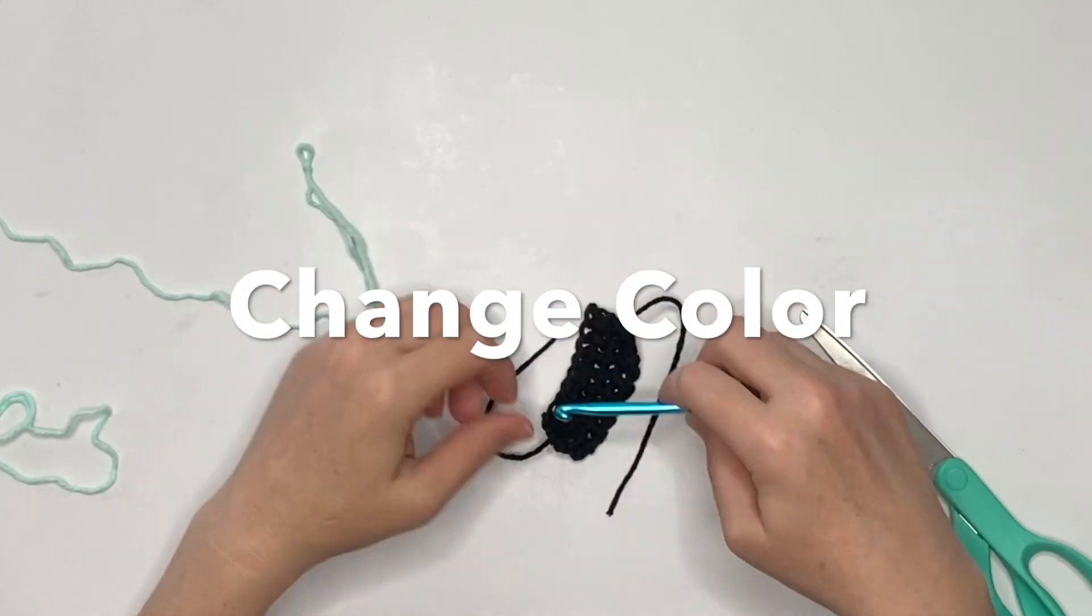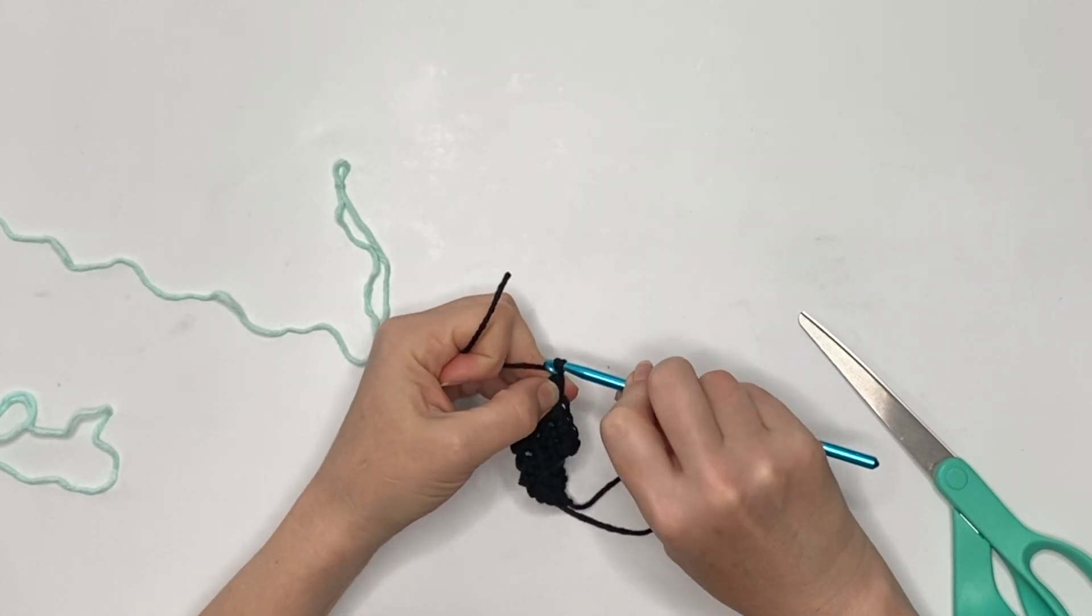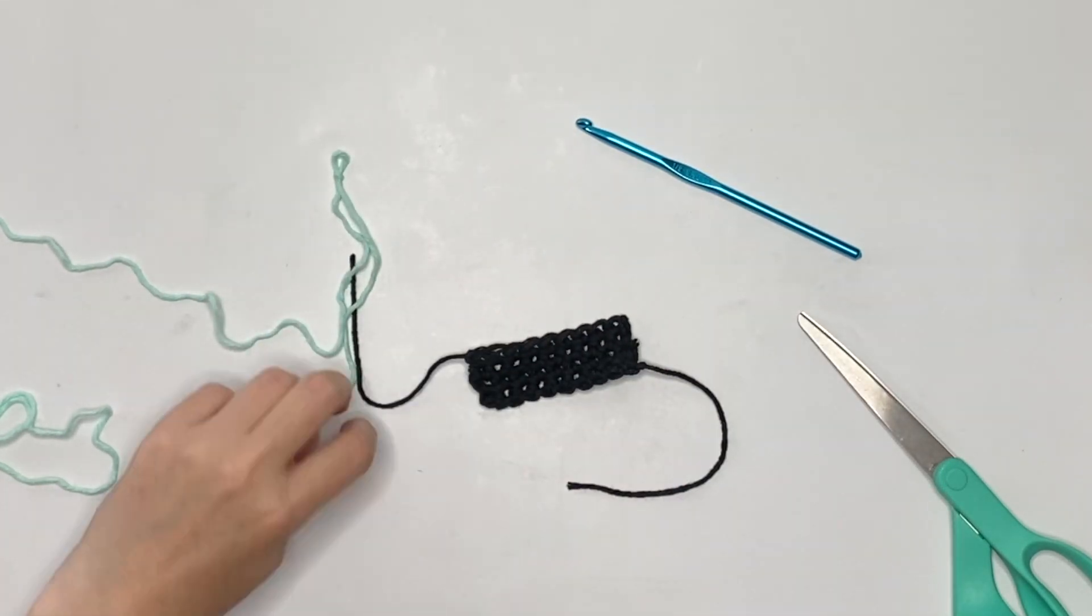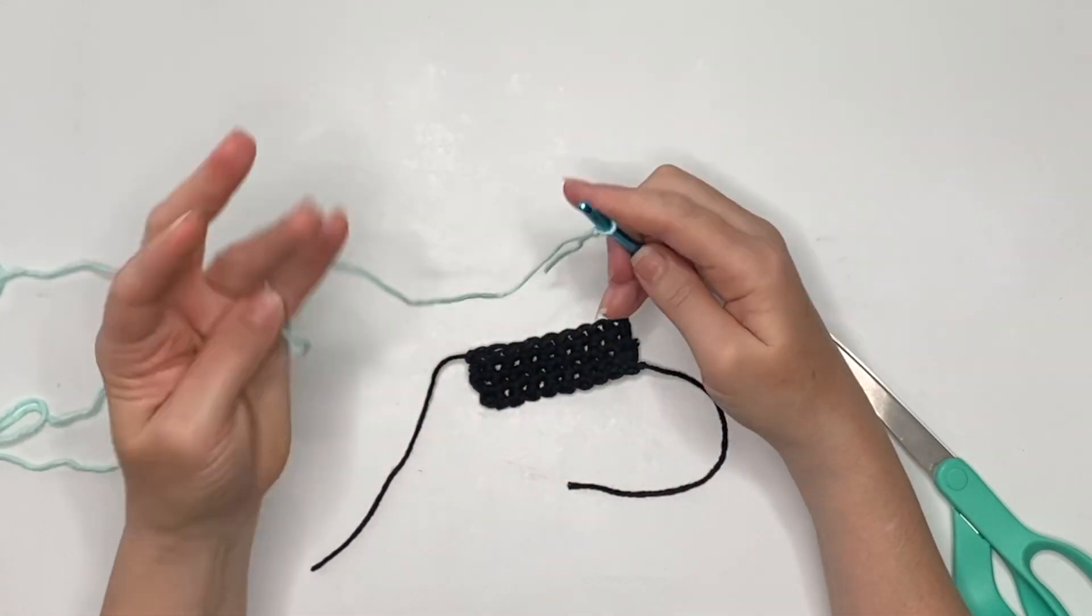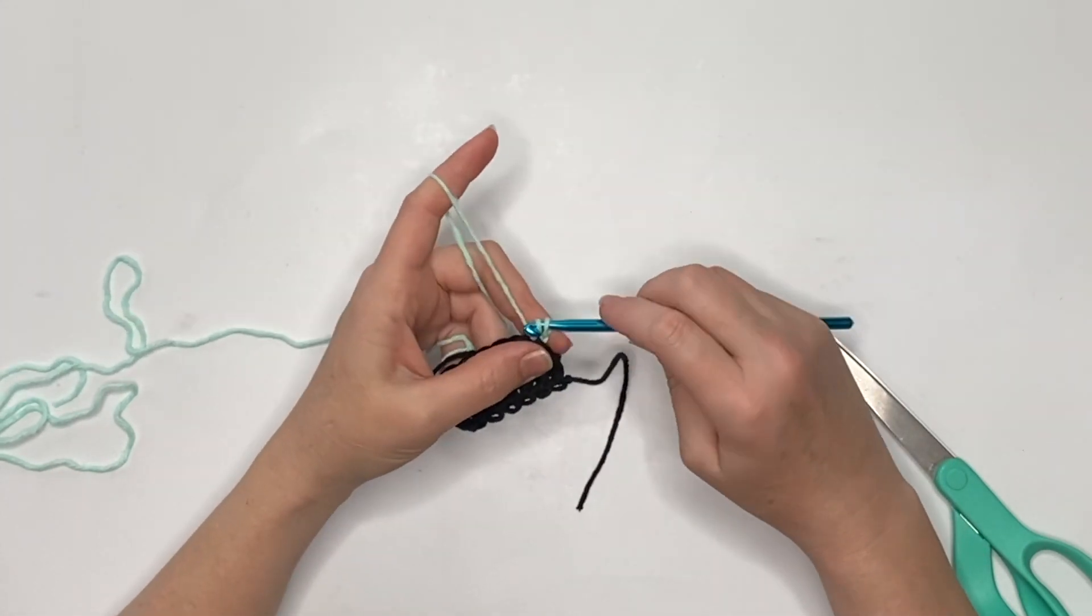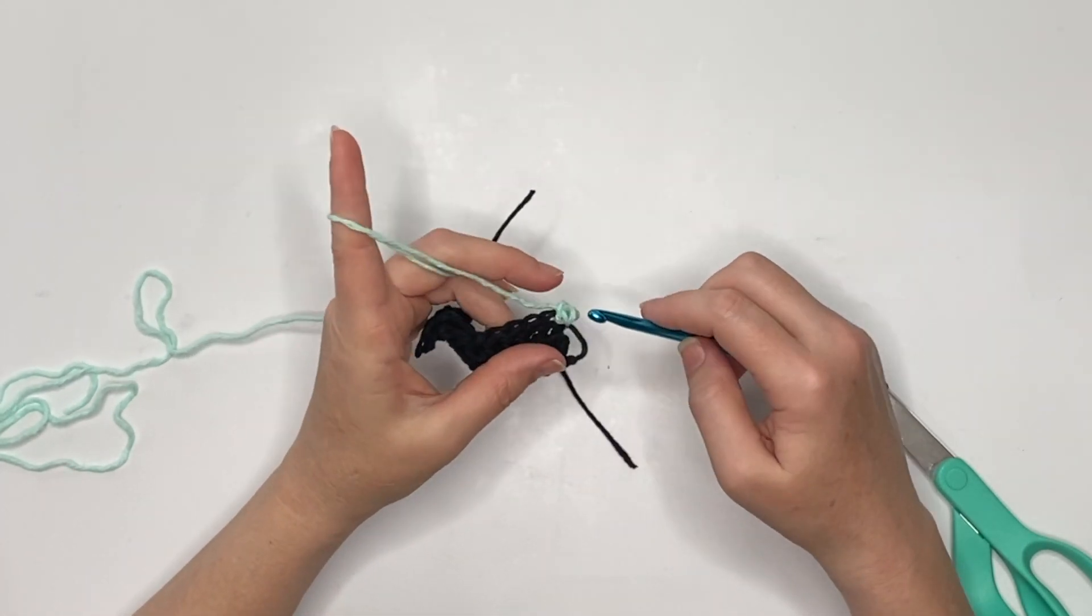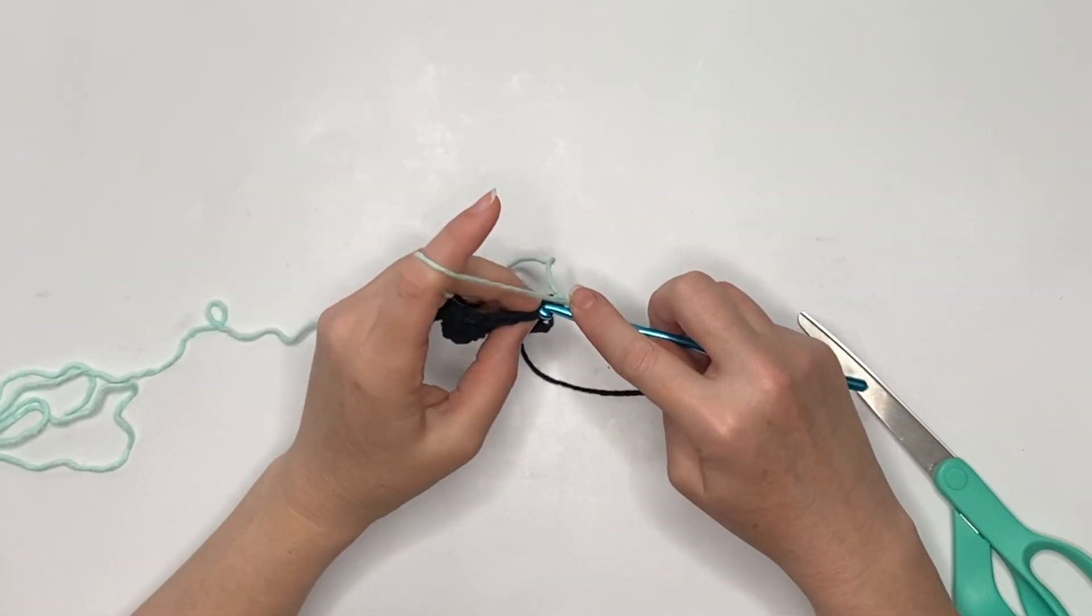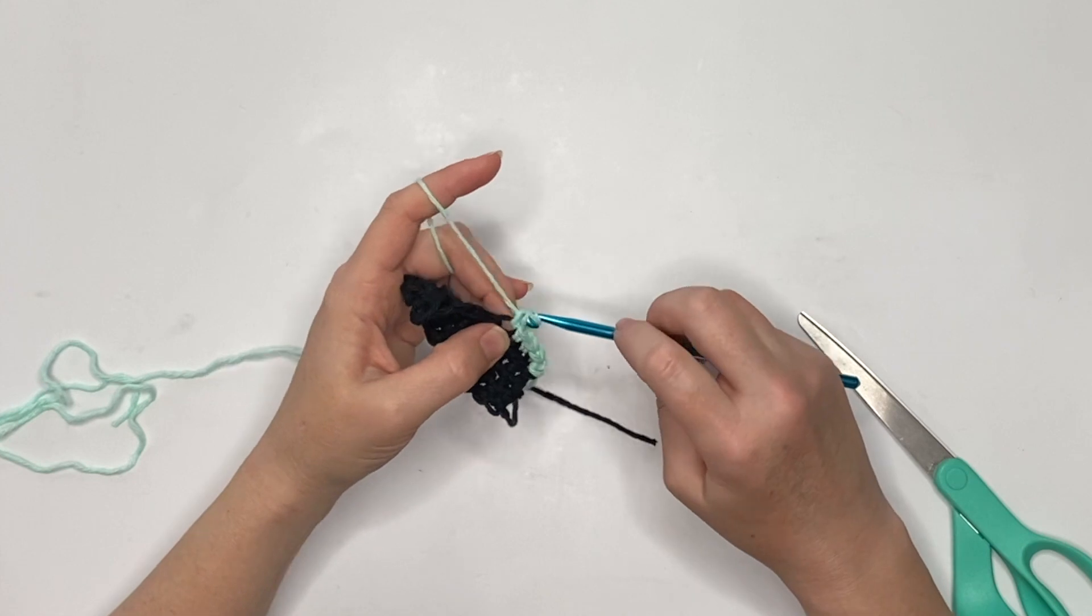Go ahead and fasten off the black color A and switch to your color B. With that one, we're just going to chain one and then single crochet in the back loop only. I used this pretty sea glass color from sugar and cream. Just single crochet in just the back loop, not the front loop. Between the little V there created by the stitch, go across with that. We're going to want to do that for those nine stitches.